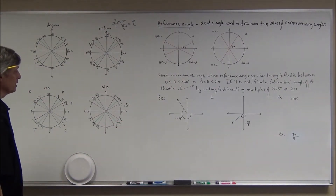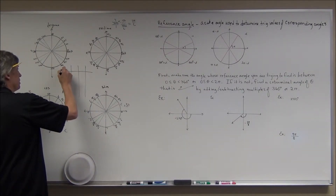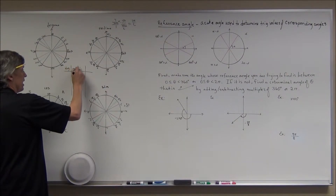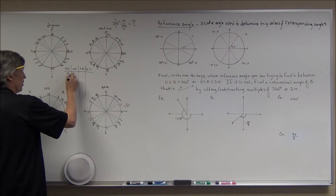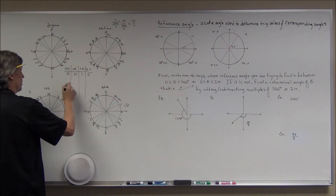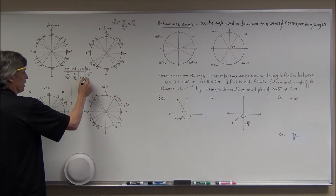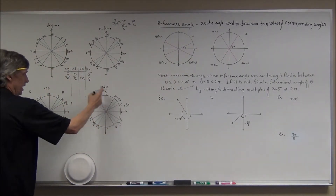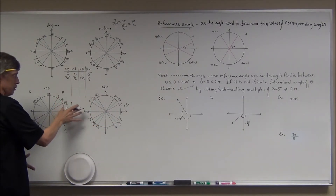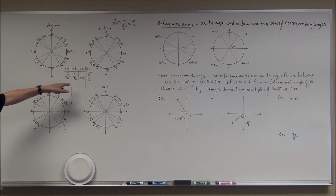When I memorized these, I made a long table with columns for degrees, radians, cosines, and sines. For example: zero degrees, zero radians, cosine = 1, sine = 0. Then 30 degrees, π/6, cosine = √3/2, sine = 1/2. I looked at the patterns in the table from top to bottom — it's the same patterns as in the circle, just in a column. Writing them out again and again will help you remember them.